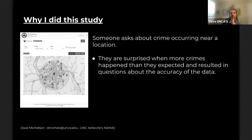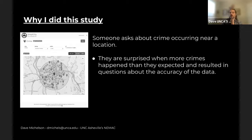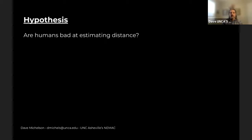I've been doing this for over 25 years, working with maps since the early nineties, really doing mapping on the web. One thing I started noticing was when someone asked about crime locations — like crime around their house or a school — and I'd come back with that answer, they were always really surprised. They expected the results to show a lot less crime. Then they'd start questioning the data, saying something was wrong. And I started wondering: are humans just bad at estimating distance? Are they even worse when it comes to a web map? There's very little literature on that — in fact, there's none.